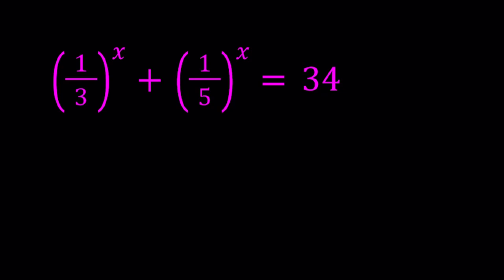First of all, I want you to note that 34 can be written as sum of 2 squares, which is 25 plus 9, and the 25 happens to be 5 squared and 9 happens to be 3 squared. So 34 can be written as 5 squared plus 3 squared.